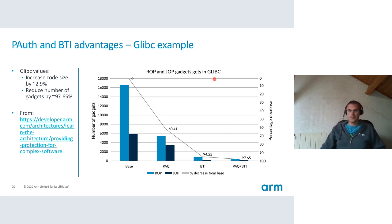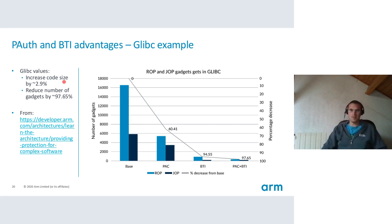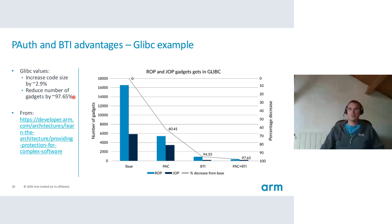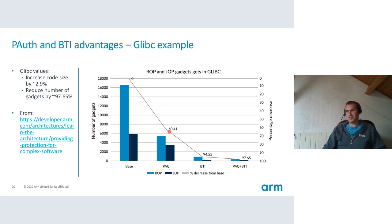Here are some numbers from the ARM document 'Providing protection for complex software'. It gives an example of the advantages of PAC and BTI on GCC. If you enable PAC and BTI, you increase code size by about 3%, but you reduce the number of gadgets — possible attack vectors — by more than 97%. Enabling only PAC decreases attacks, enabling only BTI reduces them even more, and enabling both is really, really beneficial.